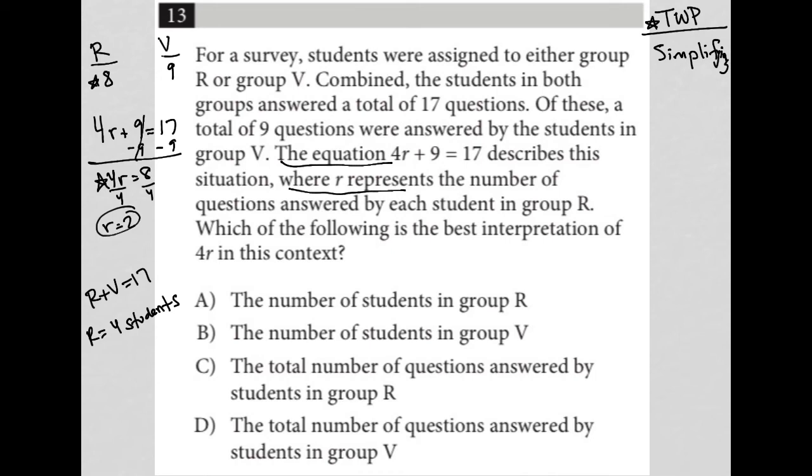Choice A, the number of students in group R. Well, that's not true because the number of students in group R is four students. Choice B, the number of students in group V. Definitely not. 4R has nothing to do with group V. Choice C, the total number of questions answered by students in group R. That's it, right? There were eight total questions answered by all of the students in group R. So, choice C must be the correct answer.